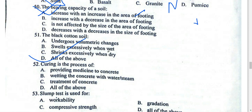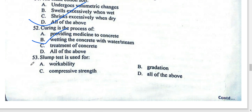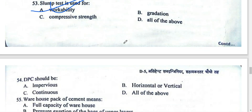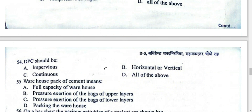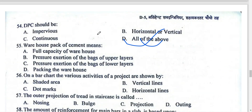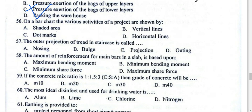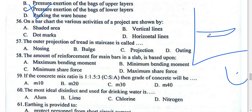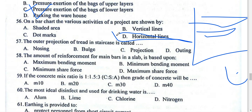The slump test measures the consistency and workability of concrete. DBC (Dense Bituminous Concrete) is a complete pavement improvement. Warehouse packing applies pressure on the lower layer. The bar chart is a time-versus-activity chart where activities are shown by horizontal bars.